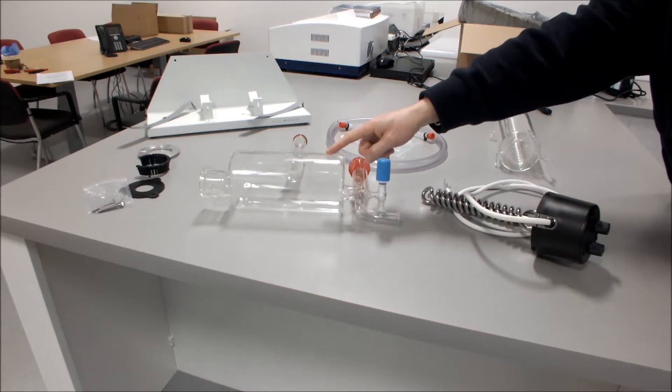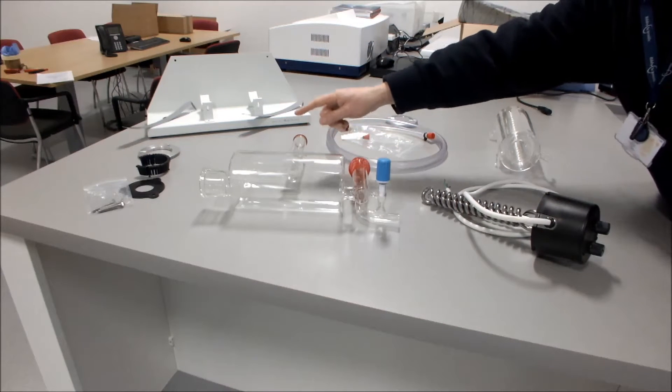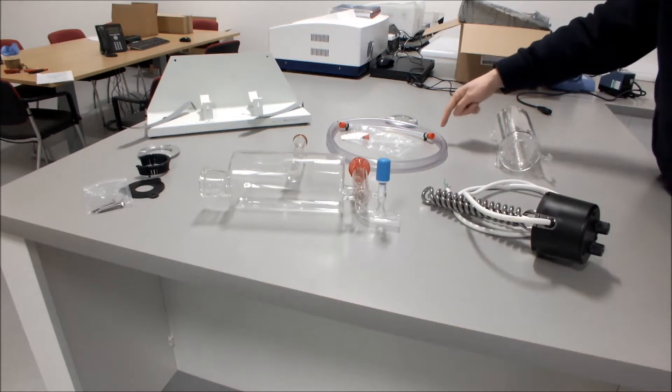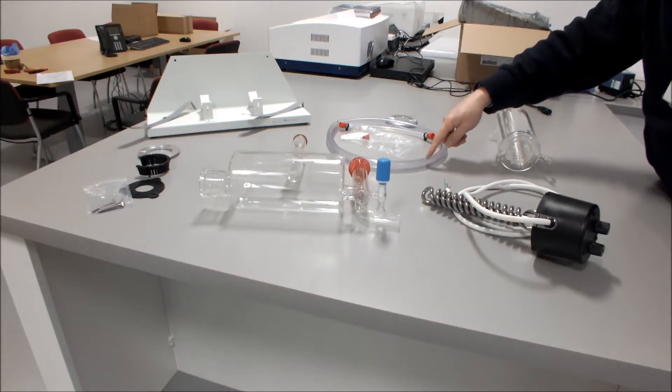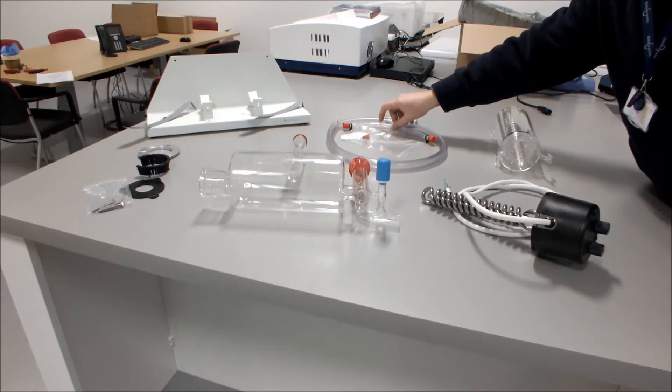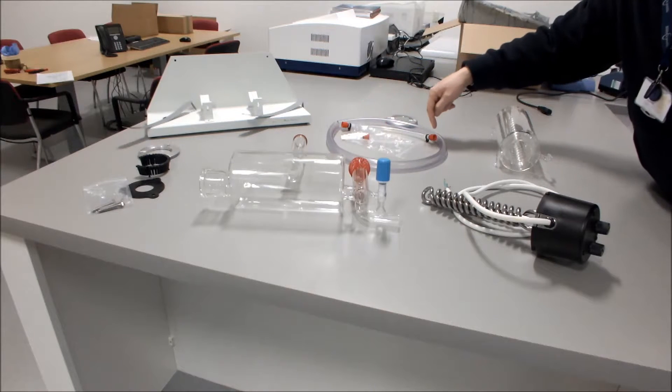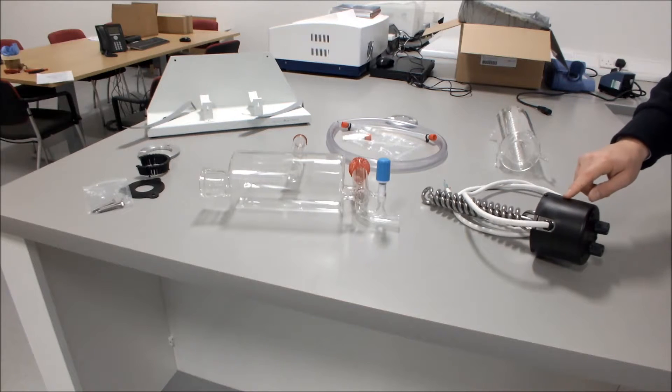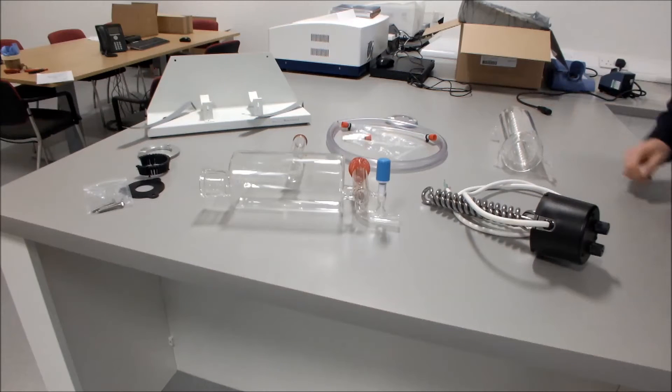You should have the boiler complete with the sealing o-ring, stabilizing o-ring, and stopcock. You should have the hose kit with a 1 meter length of 16mm hose, an 8mm hose with two connectors on the end, two tie wraps and spare connector. You should have the heater and the condenser.